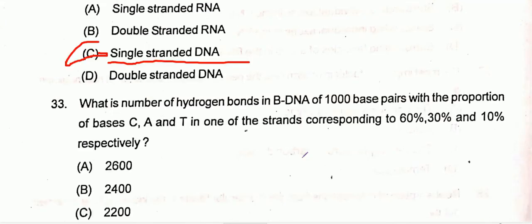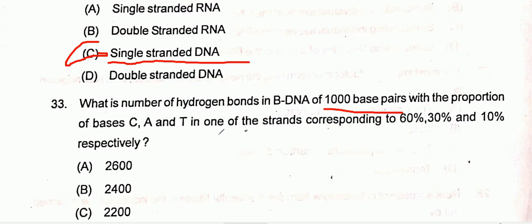Question thirty-three is a numerical type. What is the number of hydrogen bonds in B-DNA having 1000 base pairs? 1000 base pairs means 2000 nucleotides in the DNA. The proportion of bases in one strand: cytosine is 60%, adenine is 30%, and thymine is 10%.